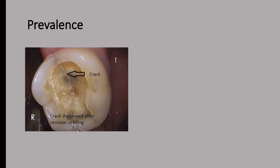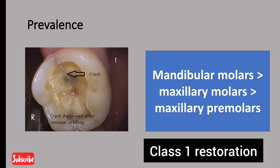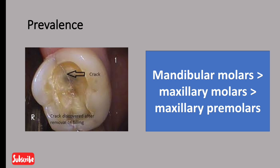In terms of prevalence, we find more cases of Cracked Tooth Syndrome in mandibular molars — they are most commonly affected — followed by maxillary molars and maxillary premolars. Most cases occur in teeth with Class I restorations, or in unrestored teeth with an opposing plunger cusp occluding centrically against a marginal ridge, which increases the chances of developing this syndrome.